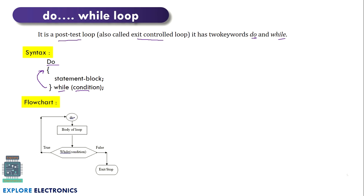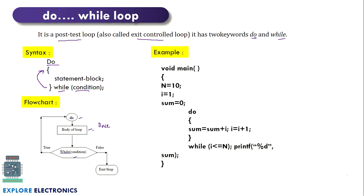This is the flowchart of the do-while loop. We have do, then the body of the loop, and then we check the while condition. If it is true, we go back to do and execute the body again. If it is false, we come out directly. That means this loop will be executed only once if the condition is not satisfied. In the example for sum of 10 numbers written using do-while, we write sum = sum + i, then increment i by 1, and then check if i is less than or equal to n.